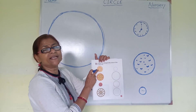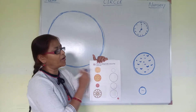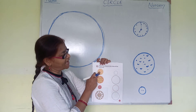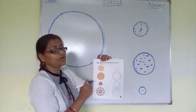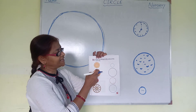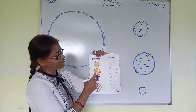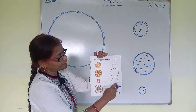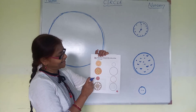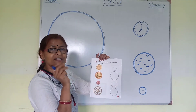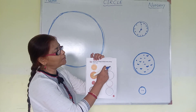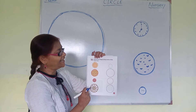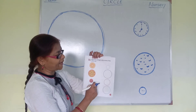Here is a picture of an orange — half orange. It is a circle. We will match the orange to the orange circle. Here is a picture of a blue circle and here is a picture of a wheel. It is also a circle.